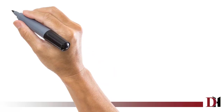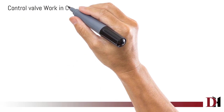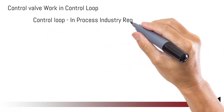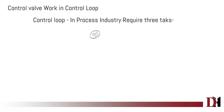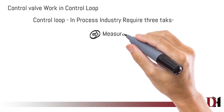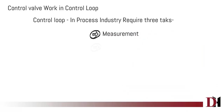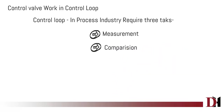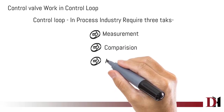A control valve works in a control loop. For a control loop, three tasks are required: first, measurement; second, comparison; and third, adjustment.